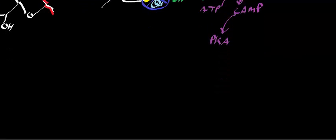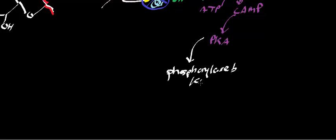So lots of cyclic AMP activate protein kinase A. And then the protein kinase A goes and activates another enzyme. And this enzyme is called phosphorylase B kinase. What this particular enzyme is going to do is it's going to phosphorylate glycogen phosphorylase.